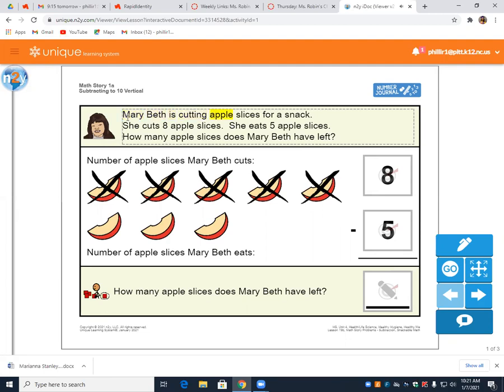Mary Beth is cutting apple slices for a snack. She cuts 8 apple slices. She eats 5 apple slices. How many apple slices does Mary Beth have left? Can anyone identify the words that let us know that we are going to be subtracting? There are two words. I'll give you a hint. It's in the very last sentence. There are two words in that sentence that let us know that we're going to be subtracting instead of adding.